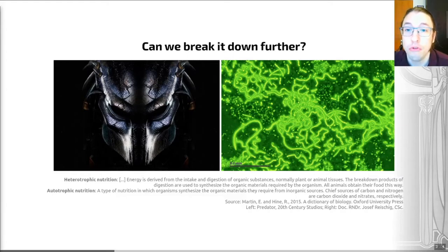In contrast to this, primary producers which create their own organic material are called autotrophs. So there's a definition of autotrophic nutrition on this slide, a type of nutrition in which organisms synthesize the organic materials they require from inorganic sources. So from inorganic sources, chief sources of carbon and nitrogen are carbon dioxide and nitrates respectively. So an autotroph is a thing that makes its own energy.